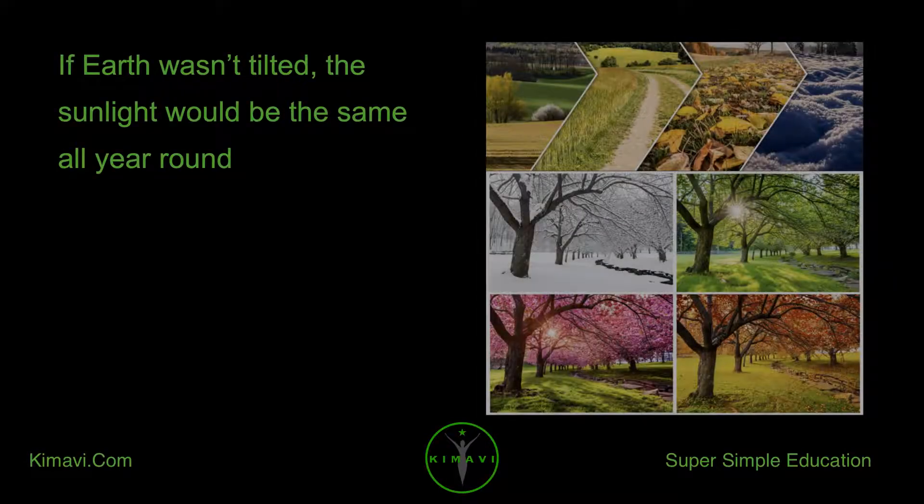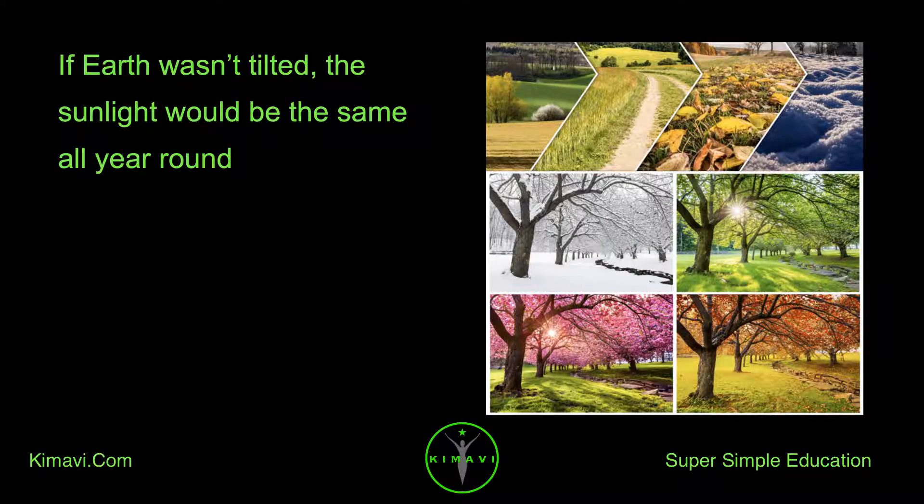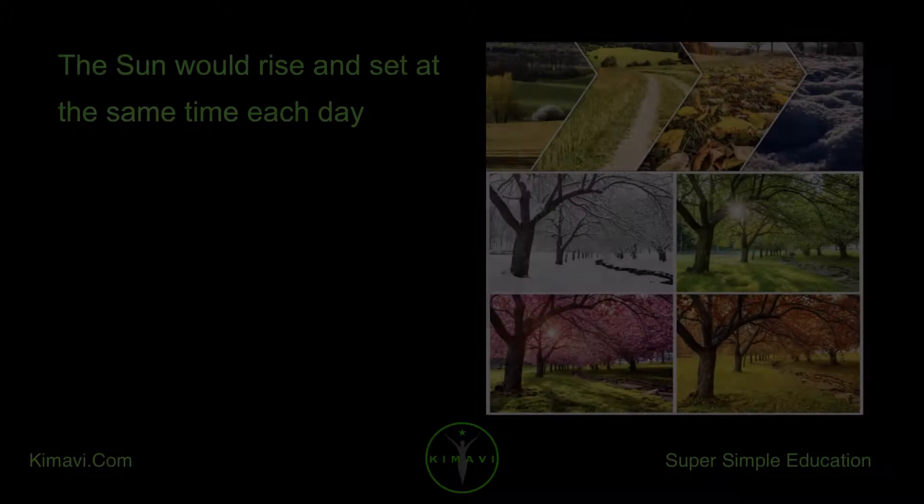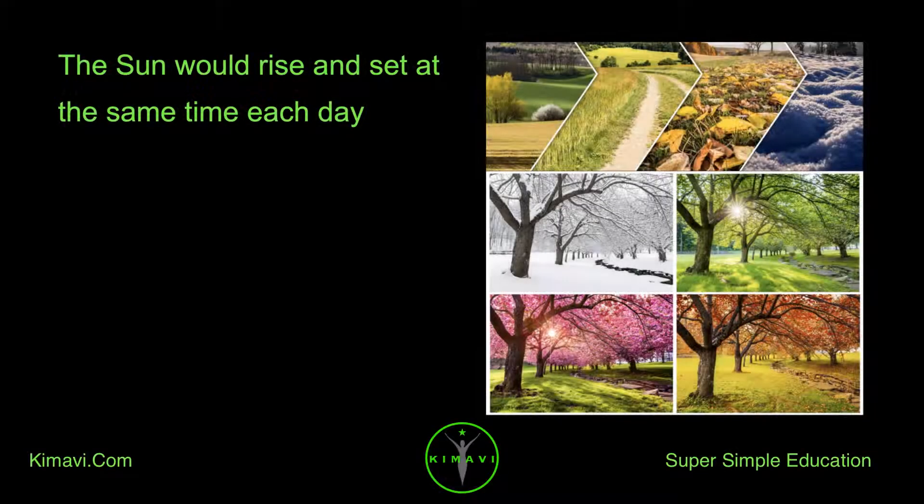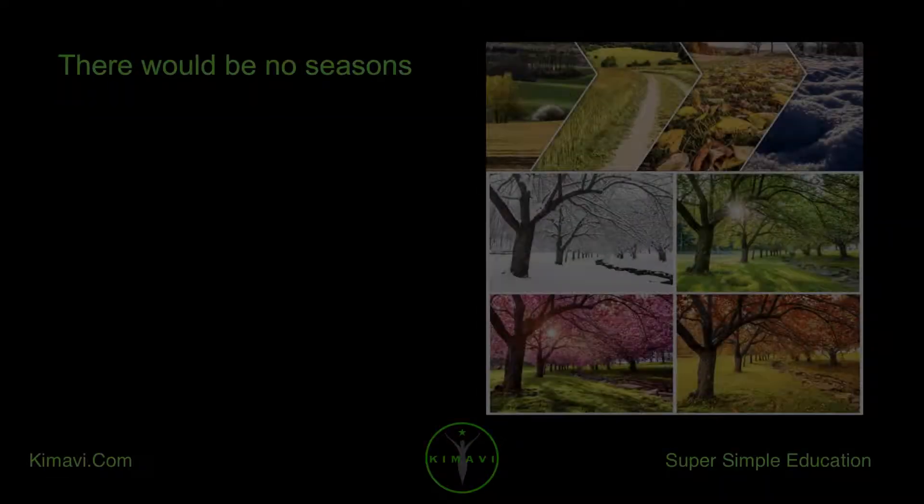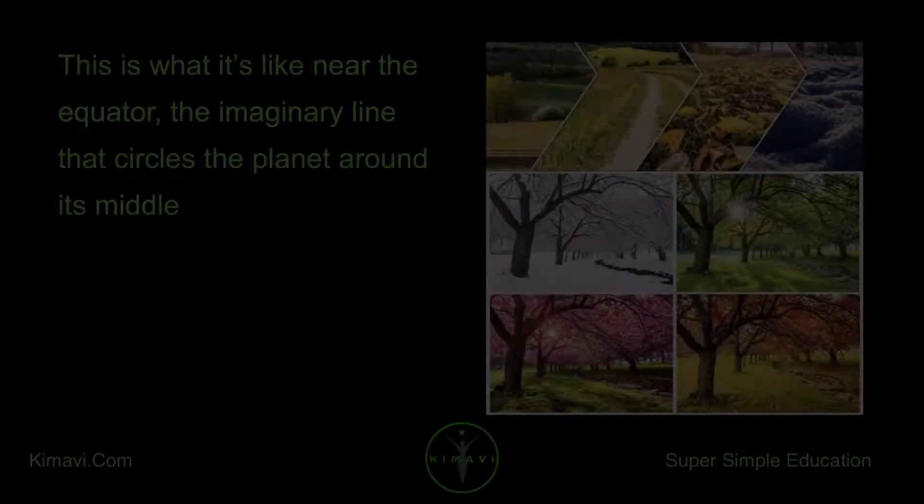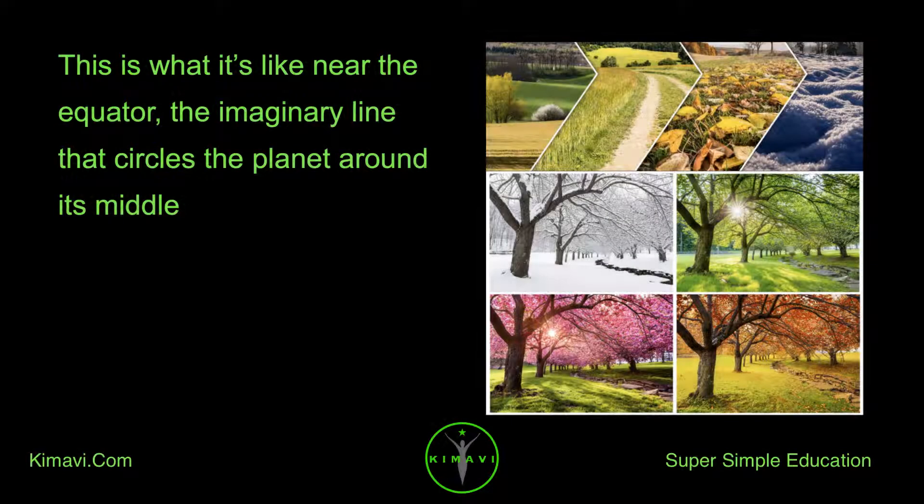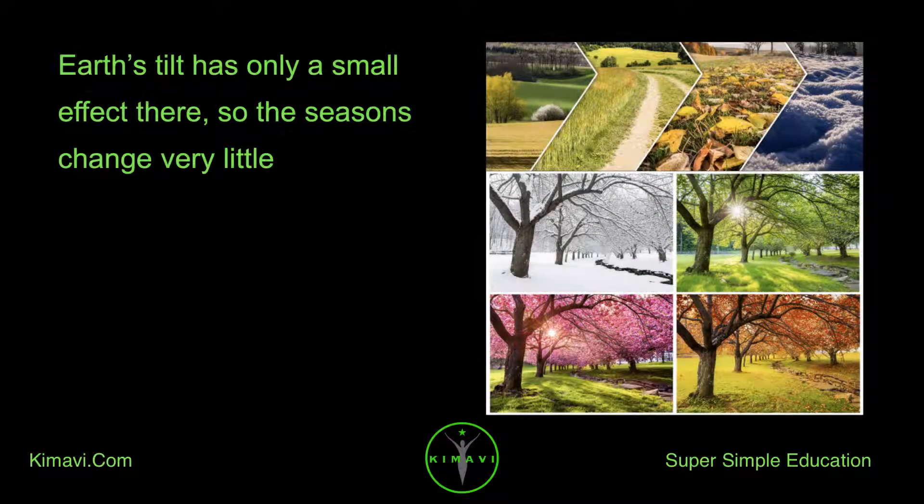If Earth wasn't tilted, the sunlight would be the same all year round. The Sun would rise and set at the same time each day. There would be no seasons. This is what it's like near the equator, the imaginary line that circles the planet around its middle. Earth's tilt has only a small effect there, so the seasons change very little.